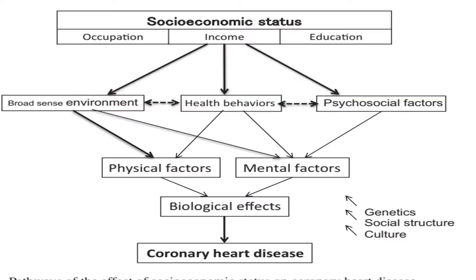This scheme shows how socio-economic status — composed of occupation, income, and education — can lead to coronary heart disease by affecting environment, health behavior, and psychosocial factors. These three in turn affect the biology of the human, leading ultimately to coronary heart disease.